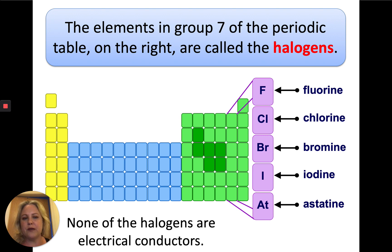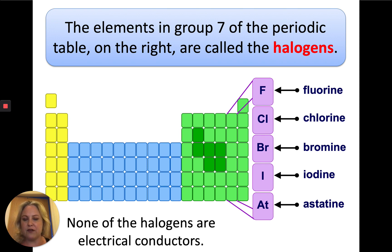You need a copy of the periodic table to have a little look at them. They are fluorine, chlorine, bromine, iodine, and astatine. None of the halogens are electrical conductors and they're all found in group 7.